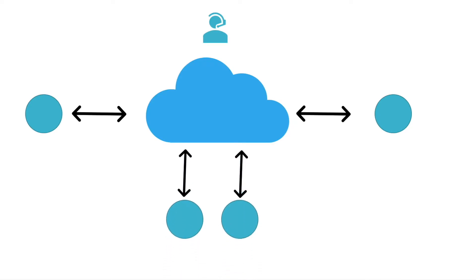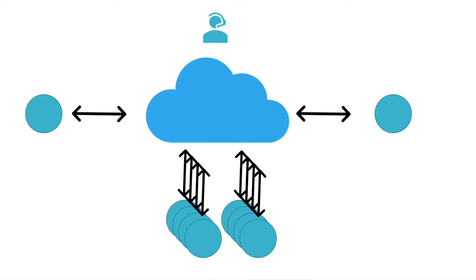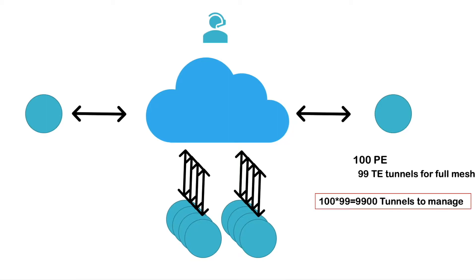So you go ahead, you add few more sites, then few more sites, then again few more sites — and this exercise keeps on happening. Eventually you find yourself doing a lot of configurations. For example, if you have 100 provider edge routers and you need to configure at least 99 traffic engineering tunnels per router to achieve full mesh, you'll have to configure 9,900 tunnels total and manage all of those. You can imagine how difficult this whole task is going to be — it's a nightmare, and there is no way a small team can manage all these.